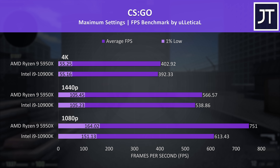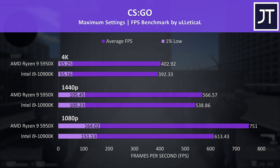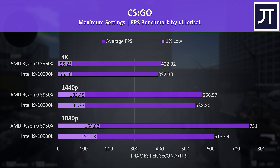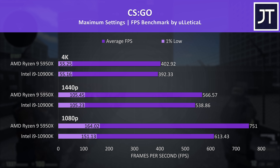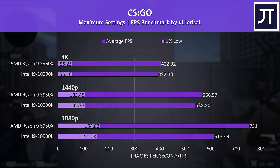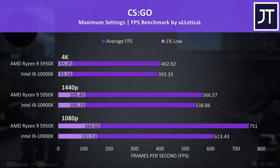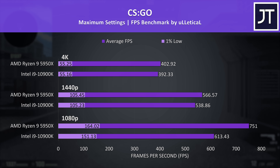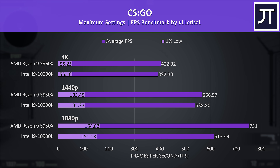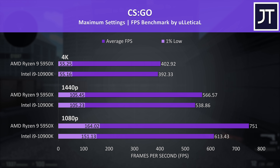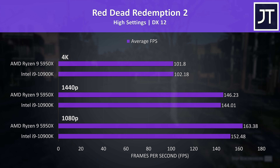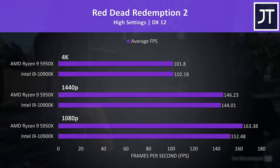I had to put CS:GO to the test as AMD were claiming some big gains with Zen 3, and I was seeing this too. This game had the largest improvement with the 5950X out of all 10 titles tested. At 1080p the 5950X was reaching 22% higher average FPS compared to the 10900K — an impressive result for a game that's done better with Intel in the past.